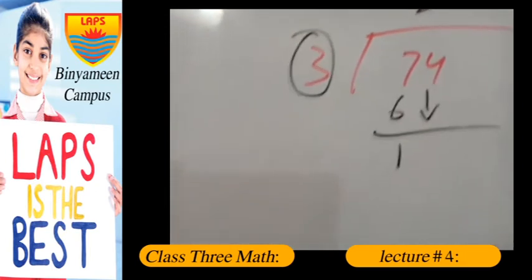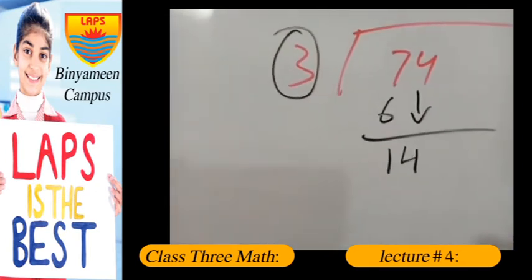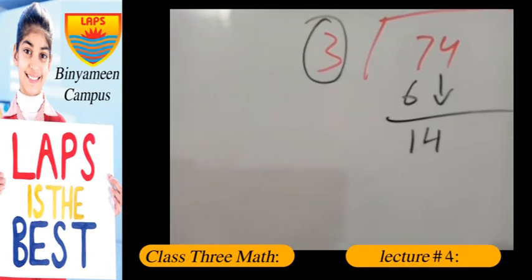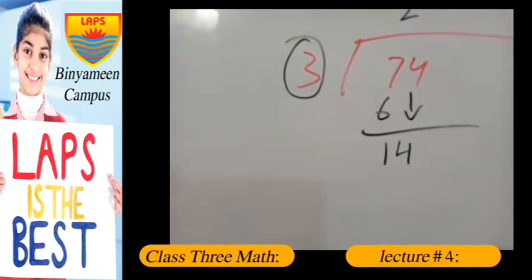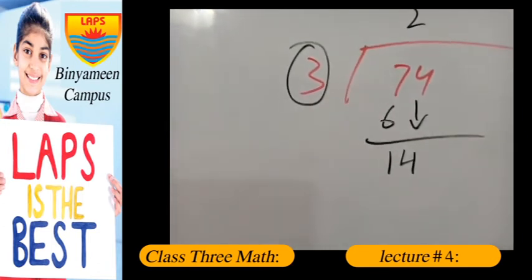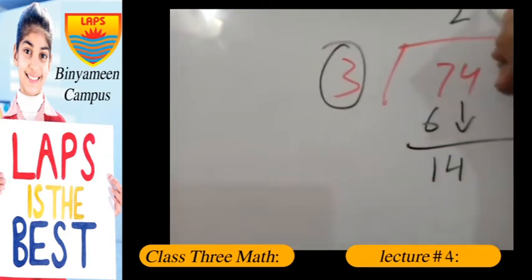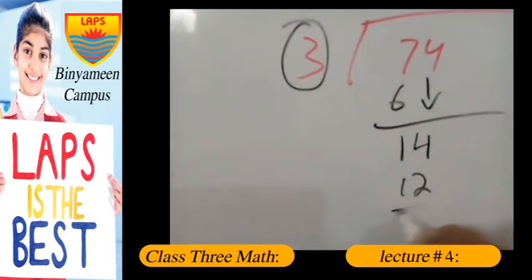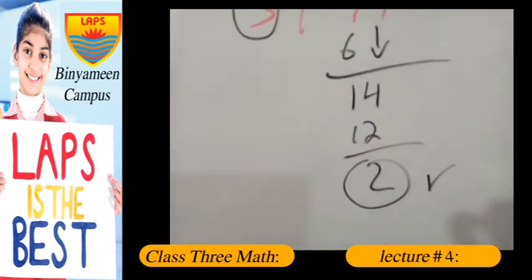So I have to take 14 here. Now 14 is also not a multiple of 3, so we have to choose a smaller number which is 12. So 3 fours are 12, and 2 will be the remainder.